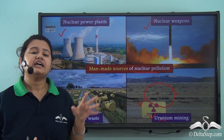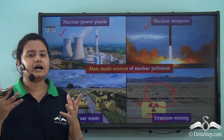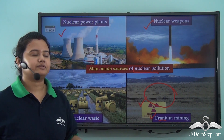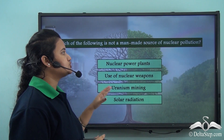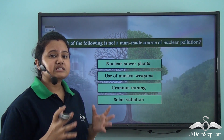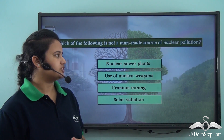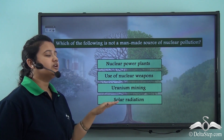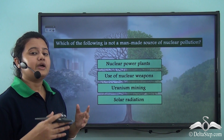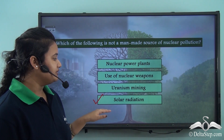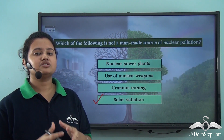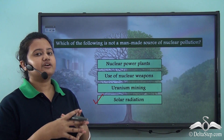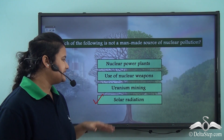Throughout, we have been saying that these radioactive substances are very harmful. Now let us discuss the harmful effects of radioactive or nuclear pollution. But first, let's answer this question: which of the following is not a man-made source of nuclear pollution — nuclear power plants, nuclear weapons, uranium mining, or solar radiation? The correct answer is solar radiation. Solar radiation is a natural source of nuclear pollution, not a man-made source, while the rest are man-made sources.